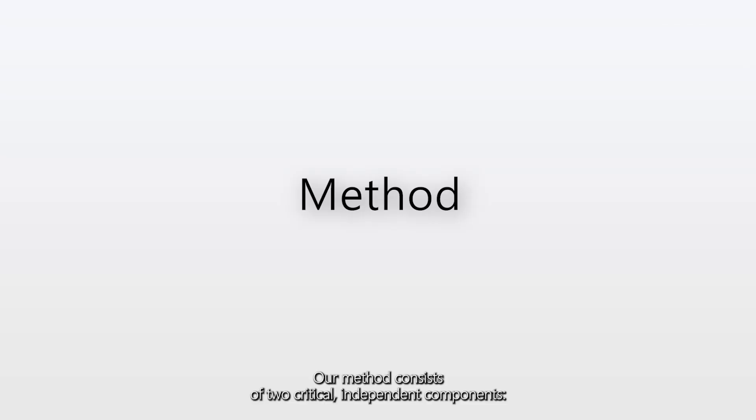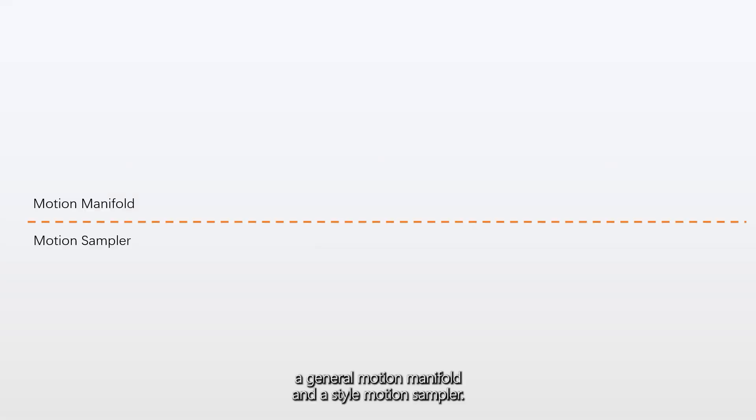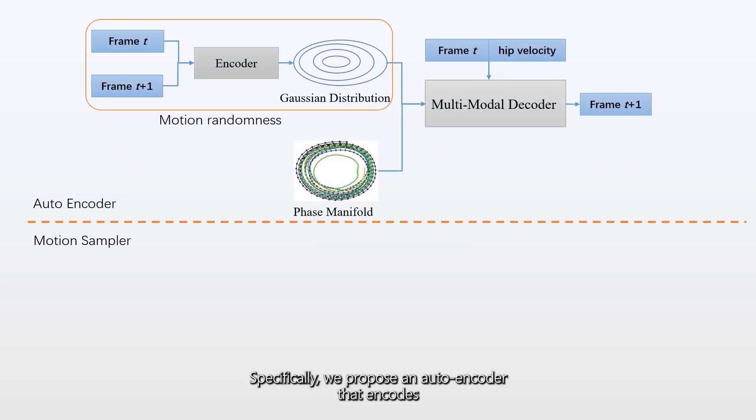Our method consists of two critical, independent components, a general motion manifold and a style motion sampler. Specifically, we propose an autoencoder that encodes motion transition randomness and motion phases.